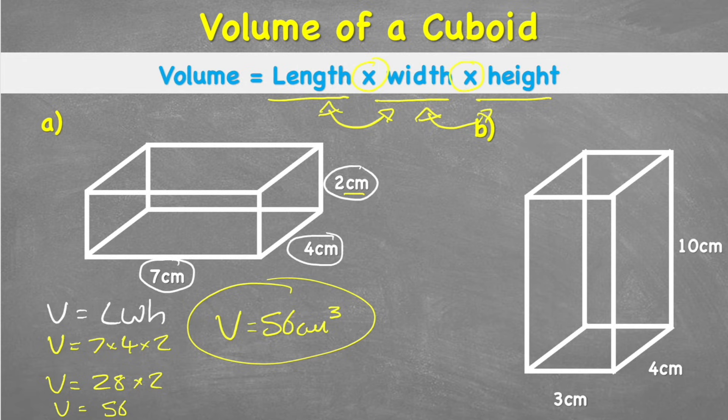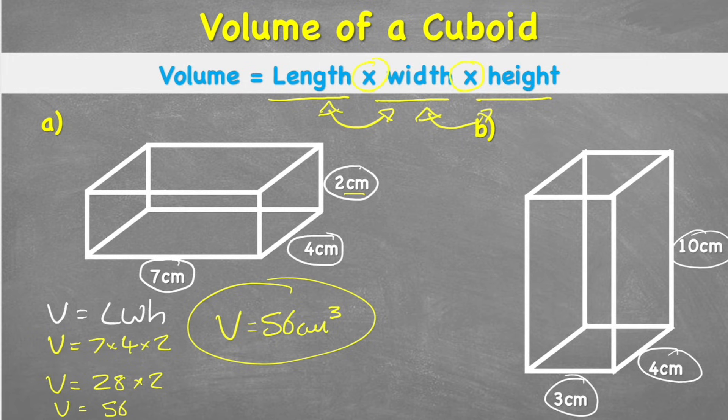Let's have a look at the second example. The second example is I have a length of three centimetres, a width of four centimetres, and a height of 10. So I've got volume equals length times width times height. Volume equals three times four times ten. And this time I'm actually going to start at the back, because four times ten is easy to do. So I'm going to do three times 40.